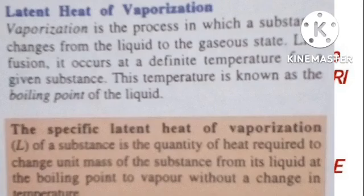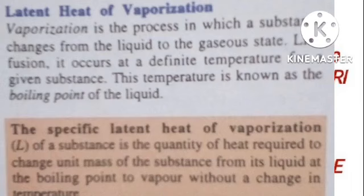Now let's talk about latent heat of vaporization. Vaporization is a process in which a substance changes from liquid to the gaseous state, and like fusion it occurs at a definite temperature. We can define it as the quantity of heat required to change a unit mass of substance from a liquid at boiling point to vapor without a change in temperature. It is given by H equals mL, where L is the specific latent heat of vaporization.